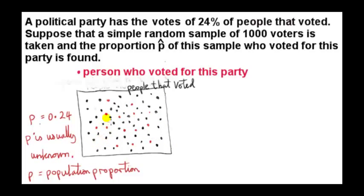A red dot represents a person who voted for this particular party. The proportion of red dots in here is 24%, represented by the letter P. So P is the population proportion.